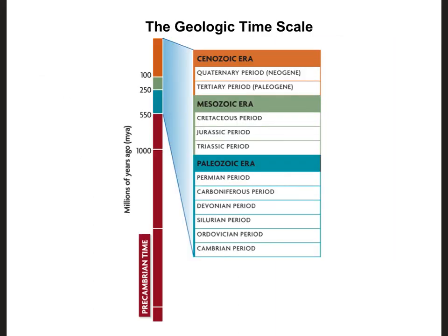Here we're looking at a schematic of what we call the geologic time scale. It's important to note that up until about 550 million years ago, we just refer to that time as Precambrian time. That name comes from the fact that the first epoch of the Paleozoic era is called the Cambrian period, so everything before that we just call Precambrian.